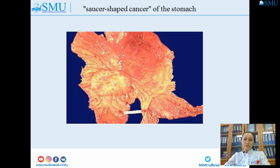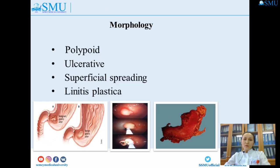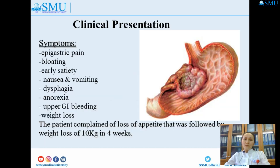This is the shape of gastric cancer. Morphology includes polypoid, ulcerative, superficial spreading, and linitis plastica types. What is the clinical presentation? Symptoms include epigastric pain, bloating, early satiety, nausea and vomiting, dysphagia, anorexia, upper GI bleeding, and weight loss. The patient complained of loss of appetite followed by weight loss of 10 kg in 4 weeks.